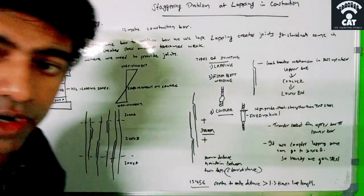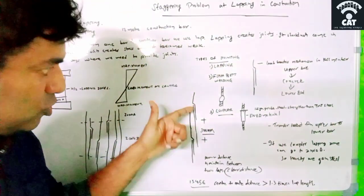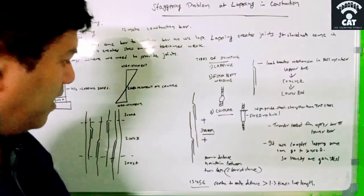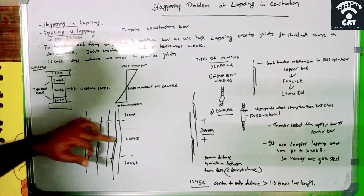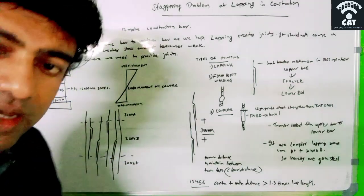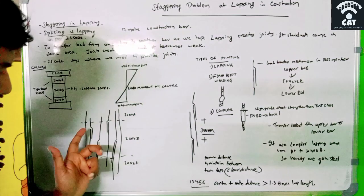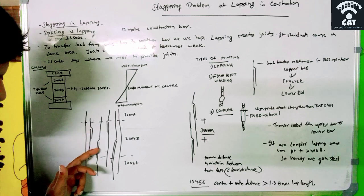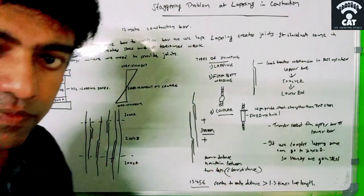For lapping, we provide a joggle bar in a ratio of 1:6, so that load transfers from one bar to the bar on top of it. According to IS code, staggering must be provided — this means the arrangement of joints of bars in a column at different areas or different lines. In a column cross-section with four vertical bars, the first lap comes at one level, the second at another, the third further up, and the fourth at a different level — not all in the same line.